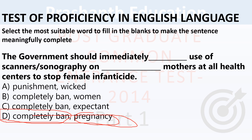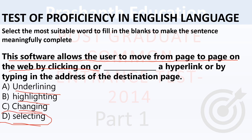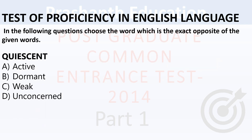Next question: This software allows users to move from page to page on the web by clicking on or ___ a hyperlink, or by typing the address of the destination page. Options: underlining, highlighting, changing, selecting. Correct answer is D — selecting.